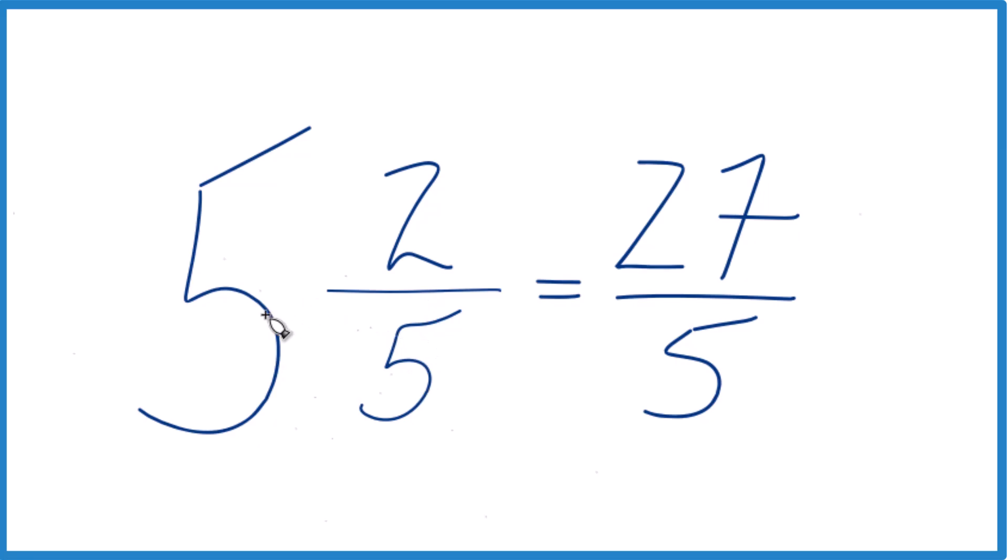Let's do it again. 5 times 5, 25, 25 plus 2, that gives us the numerator. Bring the denominator across, and you're done.